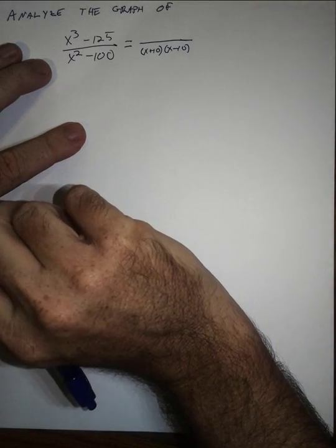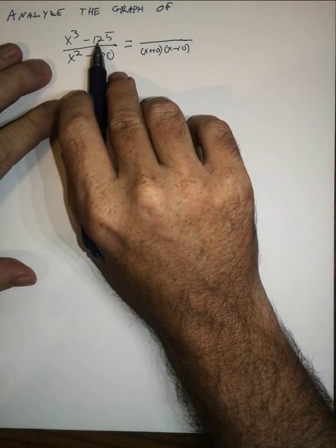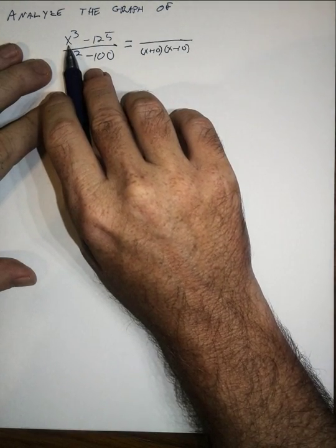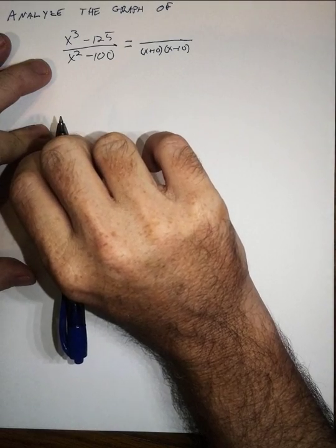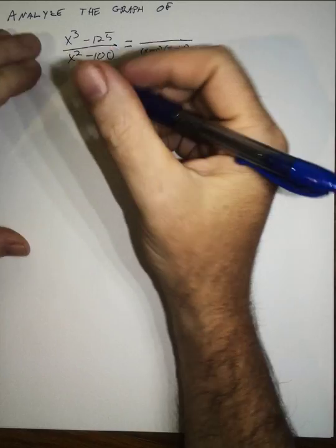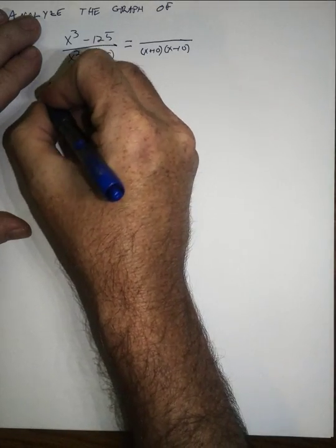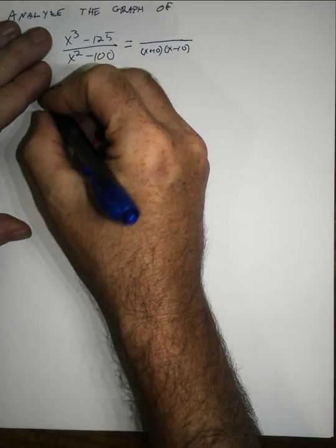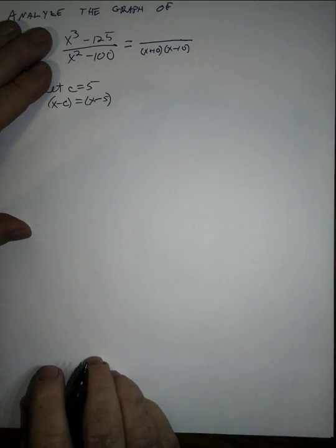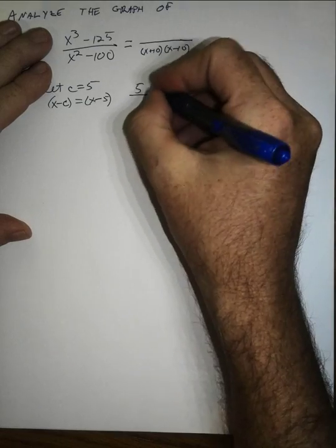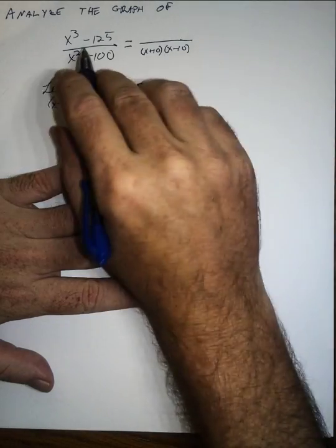The top is a difference of cubes, and you probably don't know the formula to factor a difference of cubes. But you can recognize that 125 is 5 cubed, and when x equals 5 this will be 0. So we can use synthetic division to factor this. We believe that 5 is a zero, so let c equal 5, meaning x minus 5 is the factor we're looking to divide out.